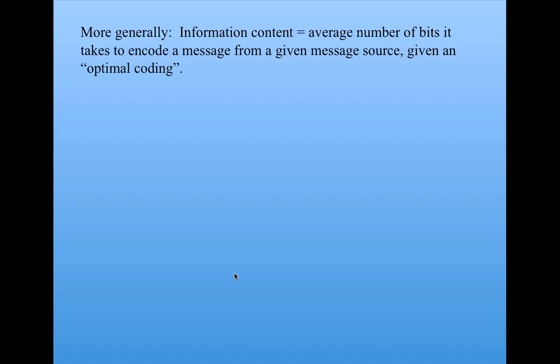So stepping back, the reason Shannon wanted to do all this measuring of information content was for the purpose of coding, and in general for optimal coding of signals that go over telephone wires. He showed that the information content, as defined earlier, gives the average number of bits that it takes to encode a message, say a signal over telephone line, from a given message source given an optimal coding. And Shannon's original paper, which was turned into a book, shows that rigorously mathematically.